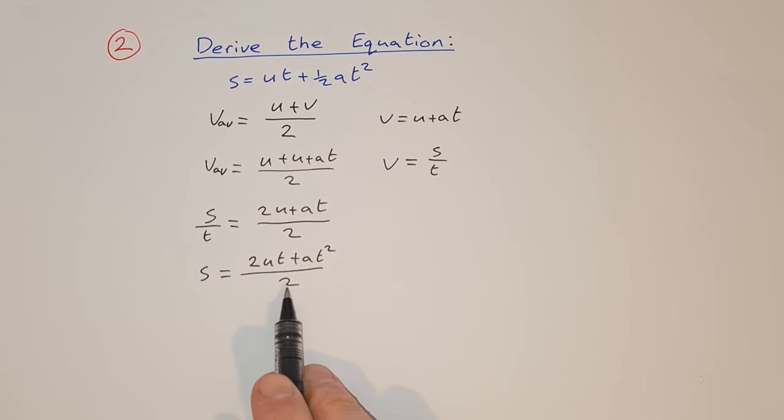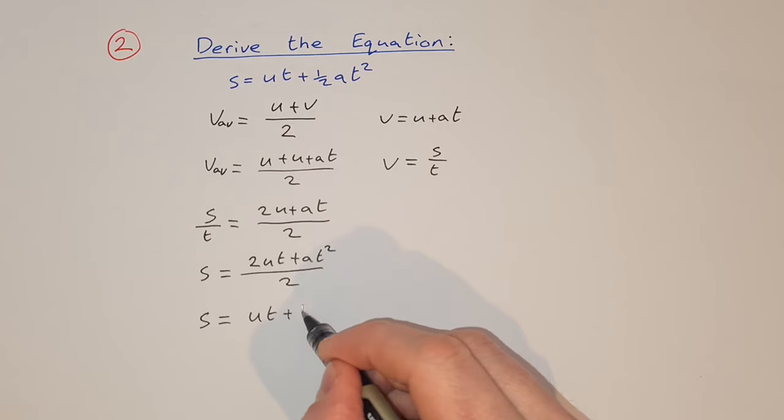And then we can just divide that 2 in, so we get s equals 2ut divided by 2 is ut, and then at squared divided by 2 is half at squared.